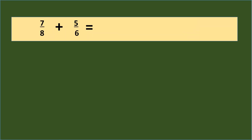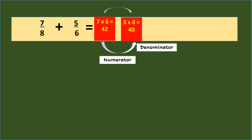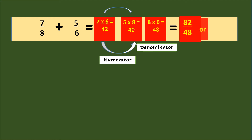Another way to add dissimilar fractions — 7/8 plus 5/6 — is to use cross-multiplication. Cross-multiply the two fractions: numerator 7 of 7/8 times denominator 6 of 5/6 is 42, and numerator 5 of 5/6 times denominator 8 of 7/8 is 40. Add 42 and 40 to get the numerator. For the denominator, multiply the denominators 8 and 6, so the denominator is 48. Therefore, 7/8 plus 5/6 equals 82/48, or simplifying it is 1 and 17/24.